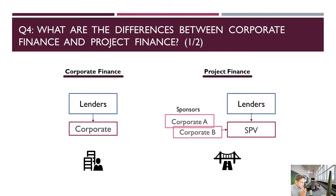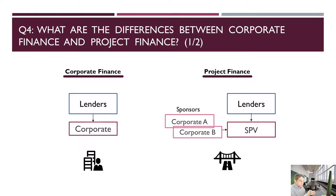So that's the difference between corporate finance and project finance. Corporate finance is less risky — we have a history. In project finance, lenders are lending to a brand new entity that has no history. But they still ask for a security package and can still have a claim over the SPV's assets.